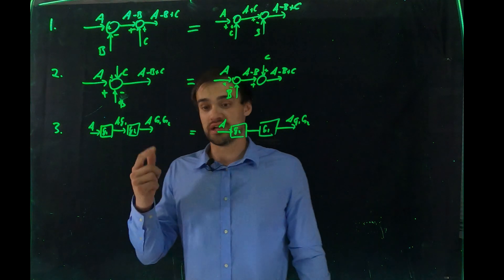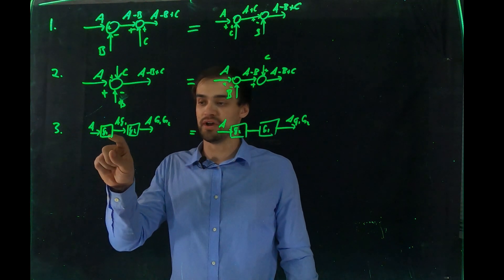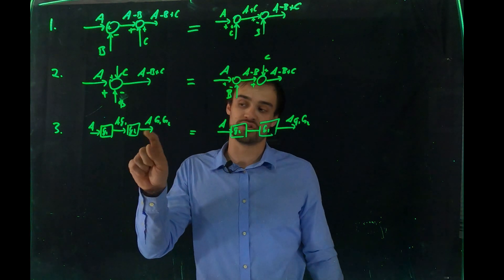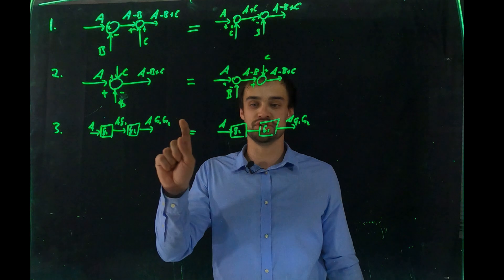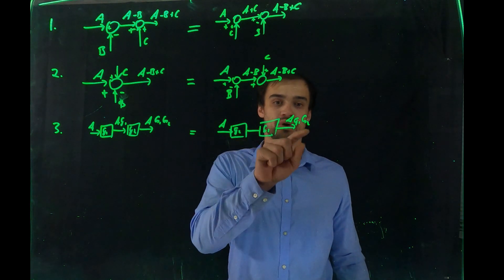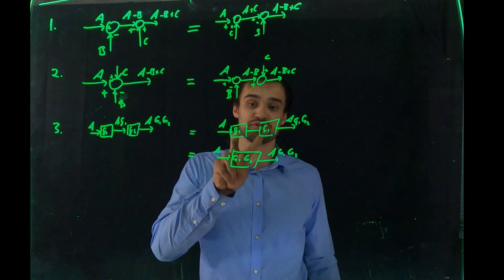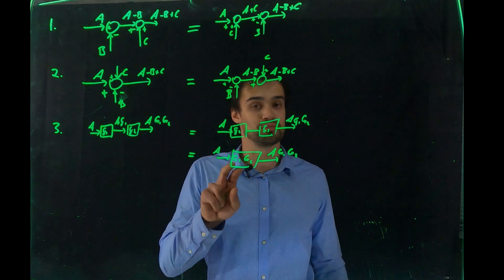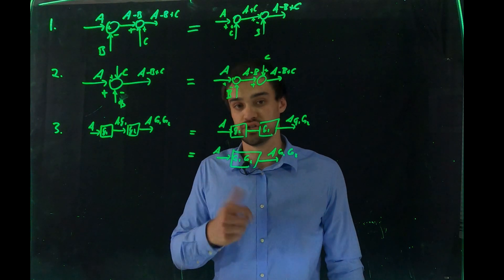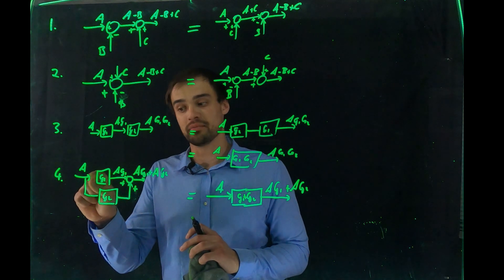Rule three is the associative property of multiplication. If input A goes through transfer function G1 giving A·G1, and then through G2 giving A·G1·G2, you can swap G1 and G2 or combine them into a single block, still resulting in A·G1·G2.